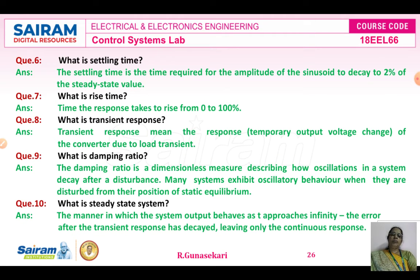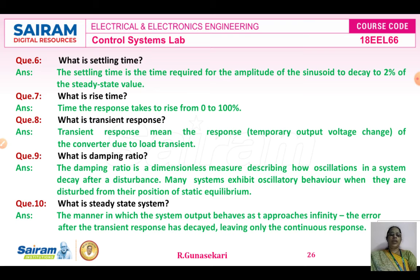Settling time is very important. The settling time is the time required for the amplitude of the response to decay to within 2 percent of the steady state value. Rise time is the time the response takes to rise from 0 to 100 percent of the steady state value. Transient response is the temporary output voltage change in the converter due to a load transient. Damping ratio is a dimensionless measure describing how oscillations in a control system decay after a disturbance.